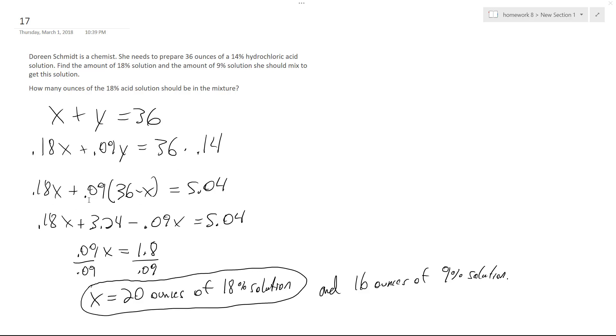All right, so I got a problem here. I already have this worked out, but I'm going to go through it step by step. There's a chemist that wants to prepare a solution that's 14% HCl, hydrochloric acid, but she only has 18% and a 9% bottle to mix together, so she needs to figure out how to get that from those two.